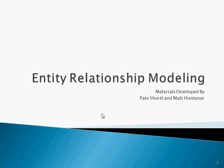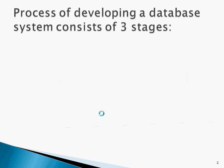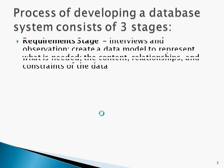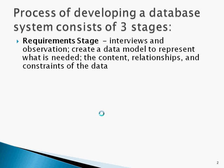Entity Relationship Modeling. The process of developing a database system consists of three stages. In the Requirements stage, interviews and observations are made. The information is used to create a data model to represent what is needed: the content, relationship, and constraints of the data.